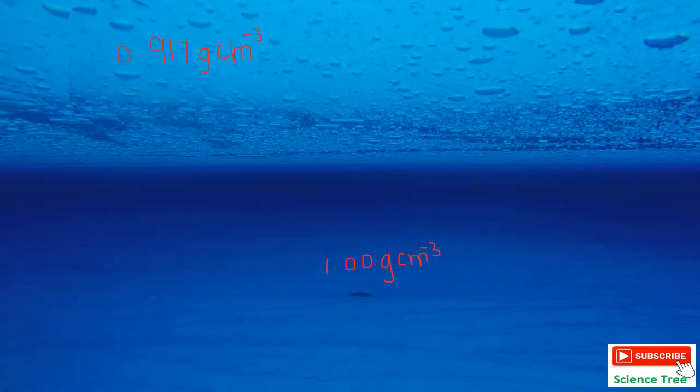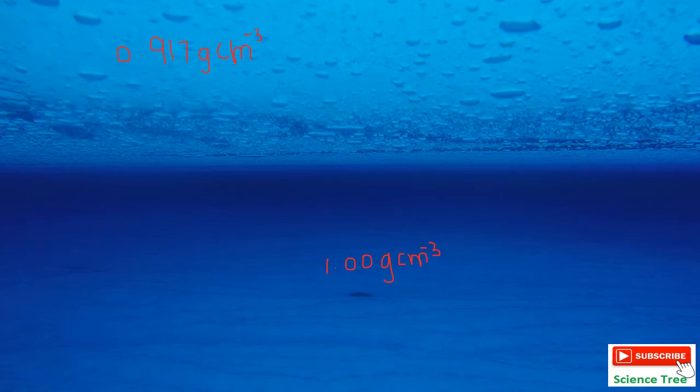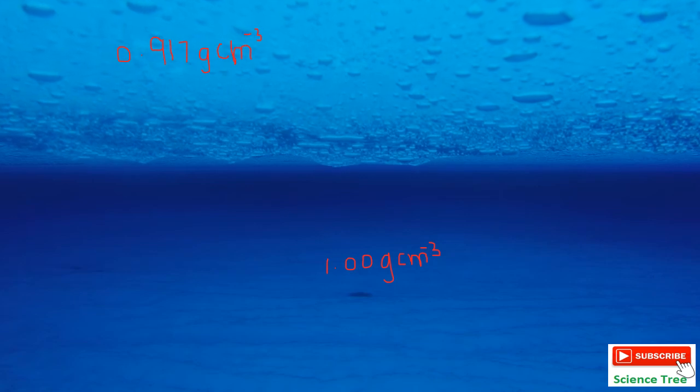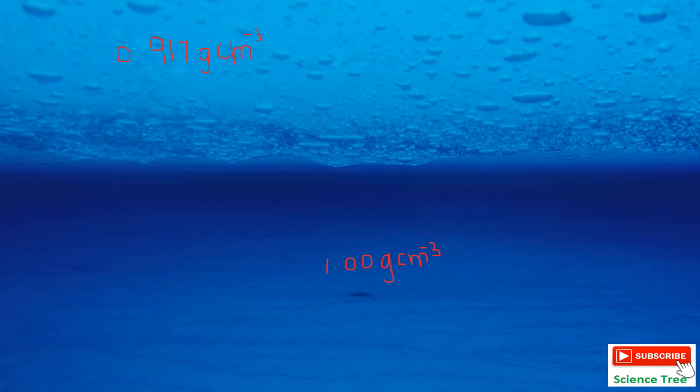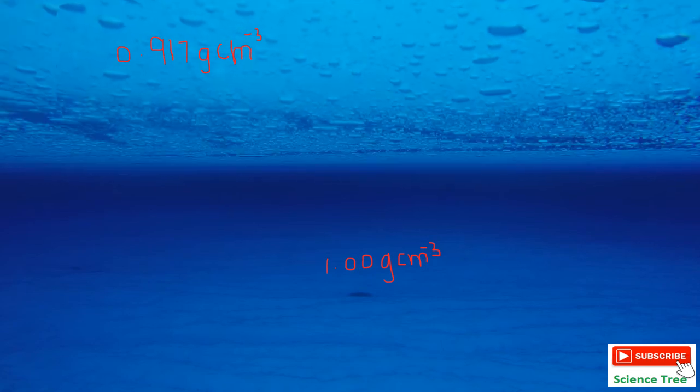Now in colder regions, a layer of ice floats on lakes. Remember, the whole lake is not freezing. If it gonna be happened, where the aquatic life will move?